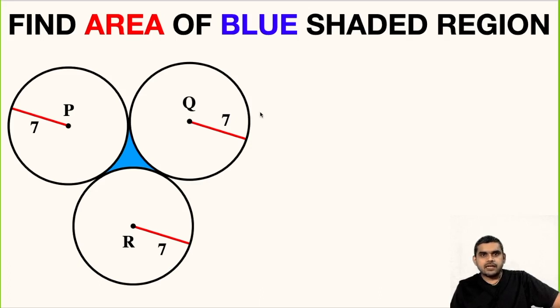So welcome back friends, today I am back with another challenging problem. In this figure there are three identical circles, each of radius 7 units, and their centers are at points P, Q, and R respectively. We are asked to find the area of this blue shaded region.